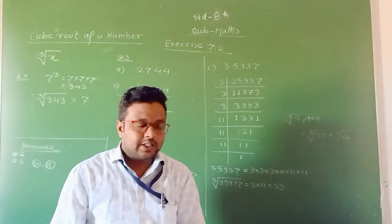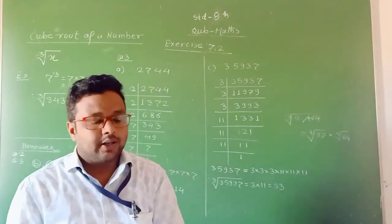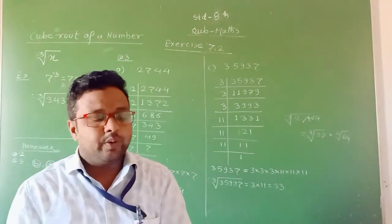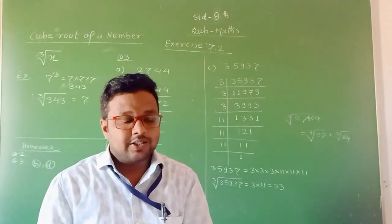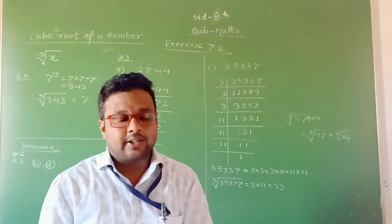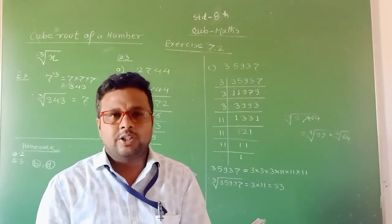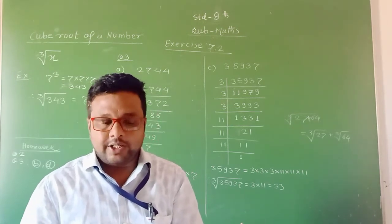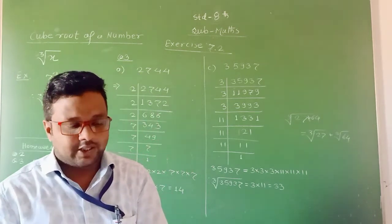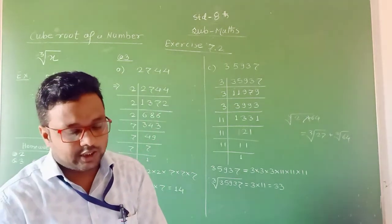Statement H: For a number to be a perfect cube, it must have prime factors in pairs. It is not necessary. This statement is false, so we write F.